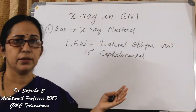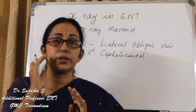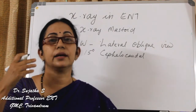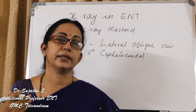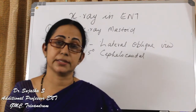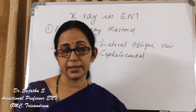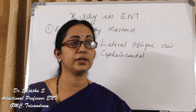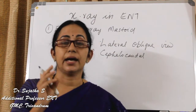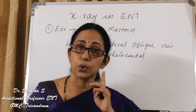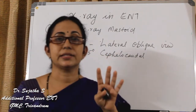In this view you will get the temporomandibular joint, the external auditory canal, the tegmen, the lateral sinus plate, and also mastoid air cells. However, the key areas — attic, aditus and mastoid antrum — are not seen in this X-ray. But you can see the other areas.